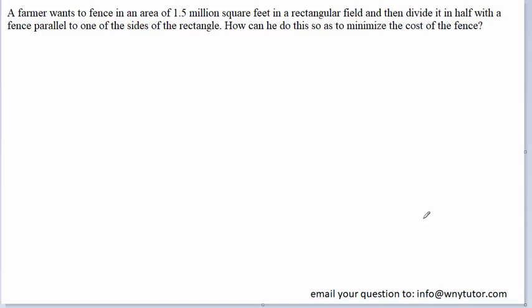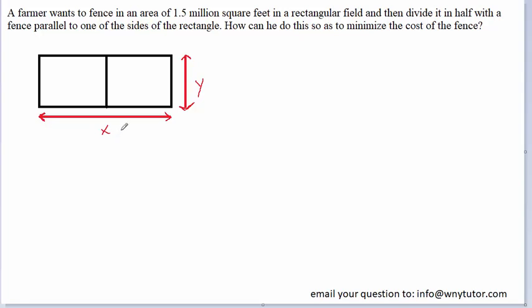Our first step will be to draw a picture of the scenario that is described. Here is a picture of the rectangular field described in the question. Notice that we have drawn a fence that's parallel to one of the sides of the rectangle, as indicated in the question. We've labeled the length of this rectangular field x, and the width y. We also want to notice that this length here would also be y, since it runs parallel to the other side that we already labeled y.